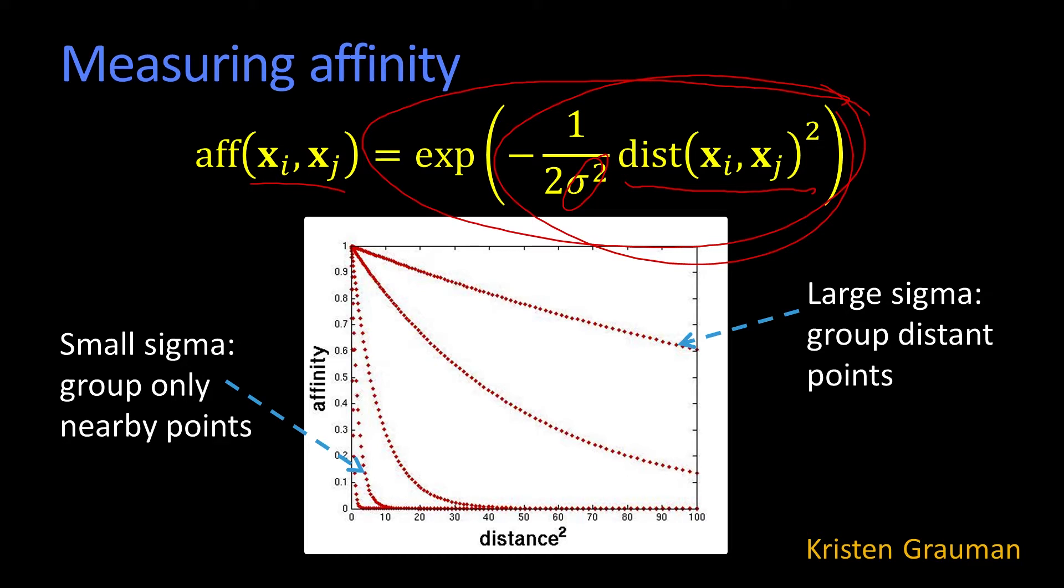Whereas if you have a large sigma, you can connect, you can have strong affinities even between points that are somewhat far away in your distance space. So if your distance includes just color, then it would be that. But typically, our distance is also going to include actual distance.